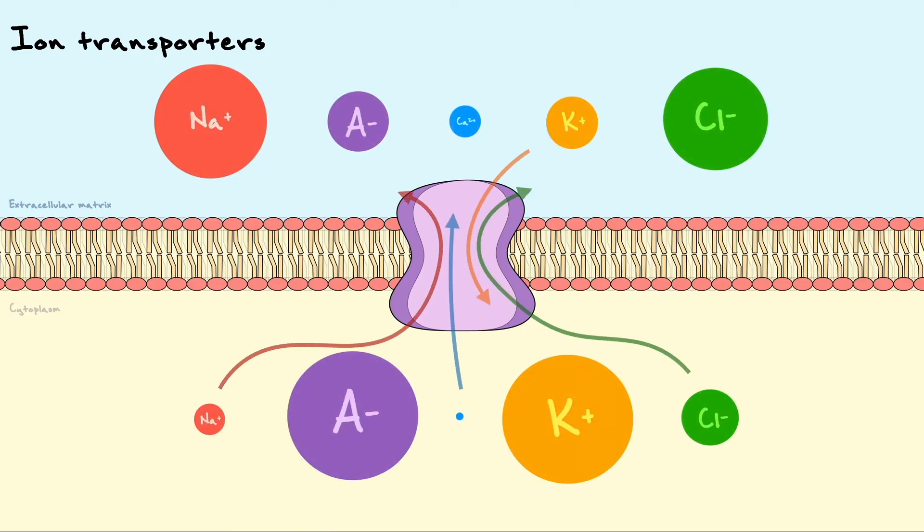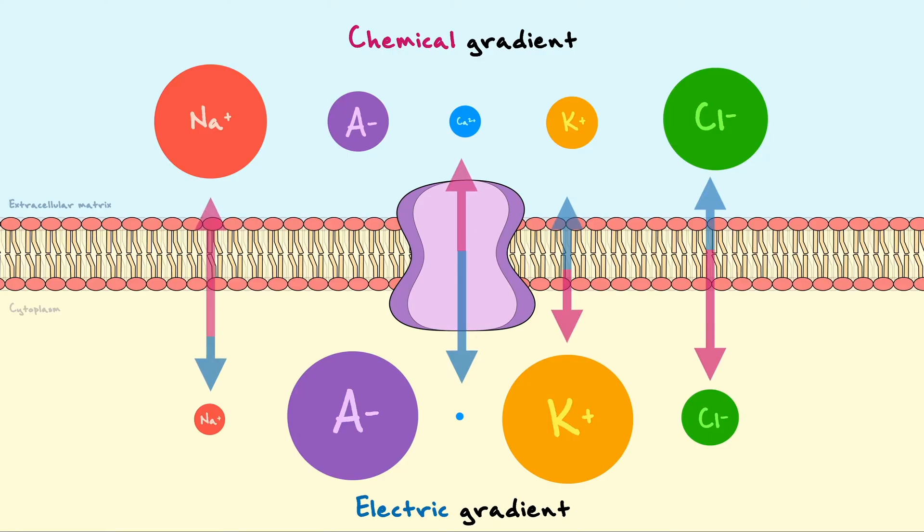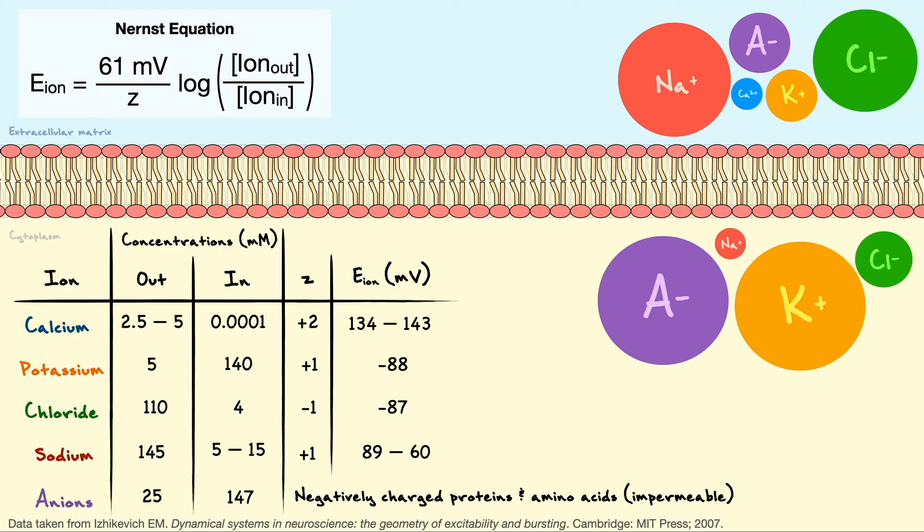Thanks to the ion transporters, each ion is now differently concentrated across the membrane. As a result, the ionic separation causes each ion to build an electrochemical gradient of its own that now greatly influences whether the ion wants to leave or enter the cell. Mathematically speaking, we were able to obtain a value of the equilibrium potential for each of our ions thanks to the Nernst equation.